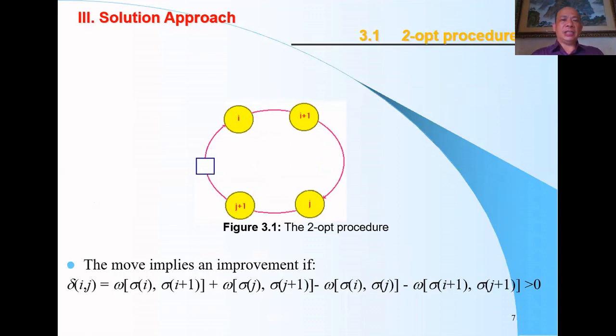2-opt procedure: We assume a tour constructed with edges i to i+1 and j to j+1. Now we use 2-opt, that means we cut the tour between i and i+1, and j and j+1, and add new edges i to j and i+1 to j+1. The move implies an improvement if the distances from i to i+1 and j to j+1 are greater than the new edges.